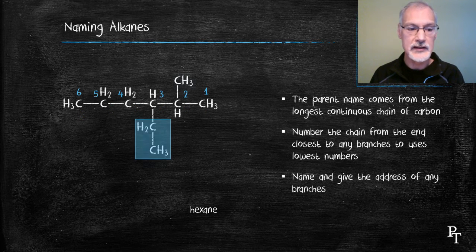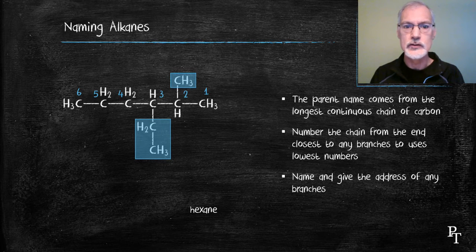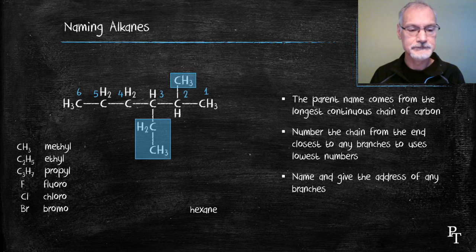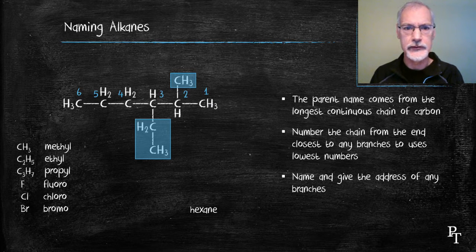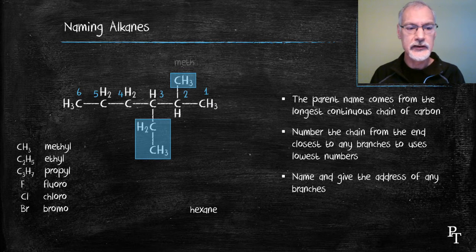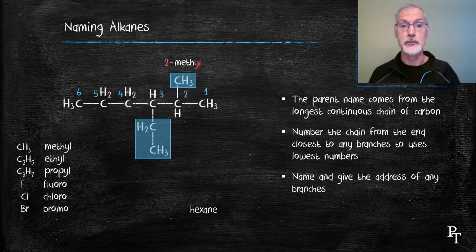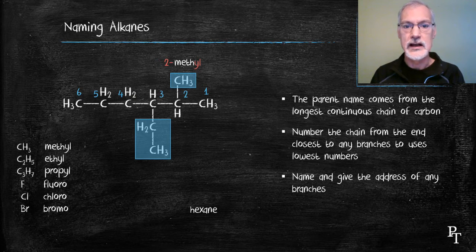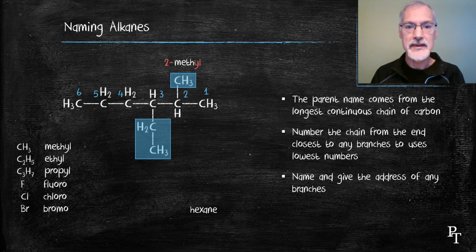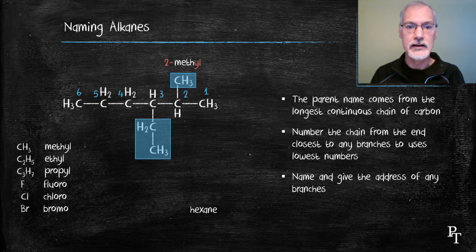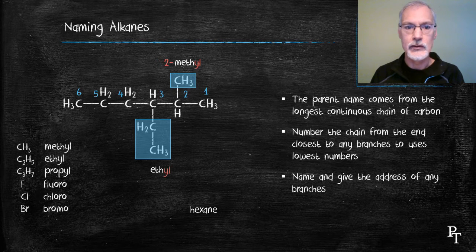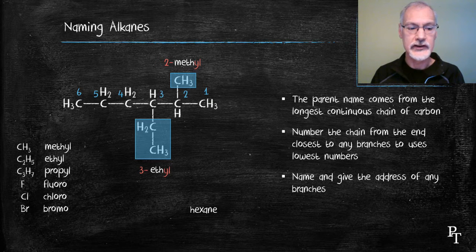I then identify my side branches. Here I've got two branches off to the side. This first branch is one carbon, so I use the prefix meth, and -yl is used to represent a radical group. You'll remember methane CH4, and this methyl CH3. I've also placed the address or location of where that side group is.